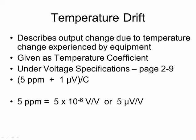Temperature drift describes how the PDAC-55 output varies or drifts as the temperature that the PDAC-55 experiences changes. You should know how to do these calculations in case you have an application where the PDAC-55 or some other equipment is going to experience a large temperature change. The fourth line in the voltage specification section on page 2-9 tells us that the temperature coefficient is 5 parts per million plus 1 microvolt per degree Celsius.